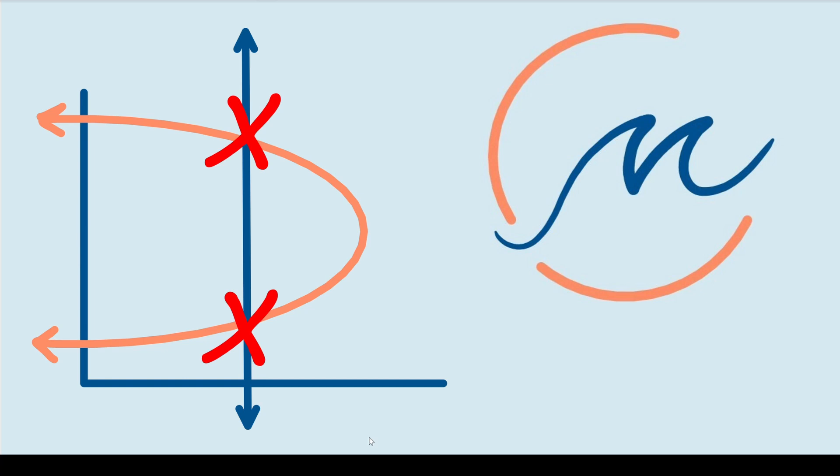So the vertical line test is quite simple. You basically imagine a straight line going through your coordinate plane just like the one shown here. Your goal is to make sure that the graph touches a line exactly one time as you move it across.